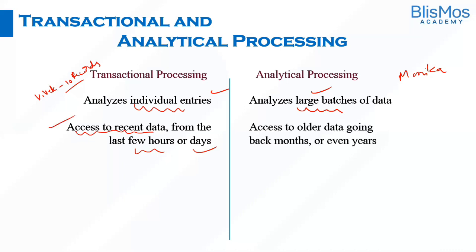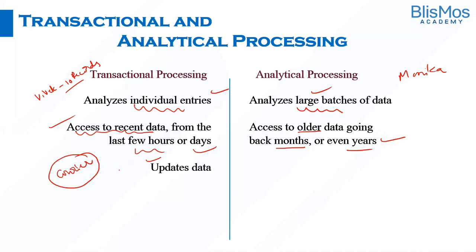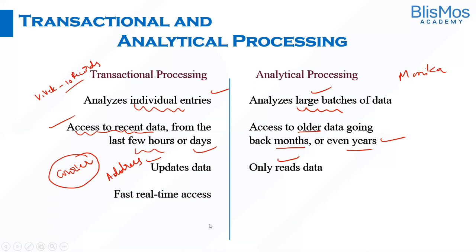In transactional processing, we access data from the last few hours or days. In analytical processing, we access older data — possibly months or even years old. In transactional processing, we typically update data, as Vivek updated the courier company and the shipping address. In analytical processing, we mostly read the data rather than update it, as Monica analyzed revenues and signup trends.